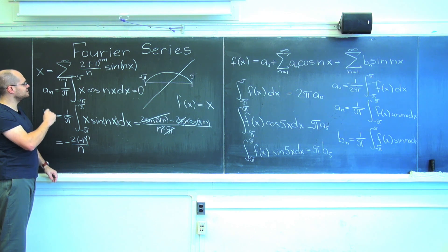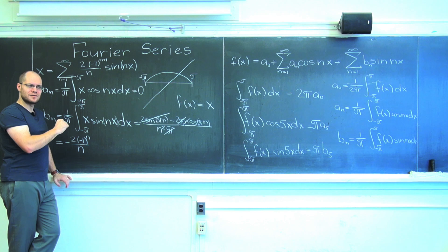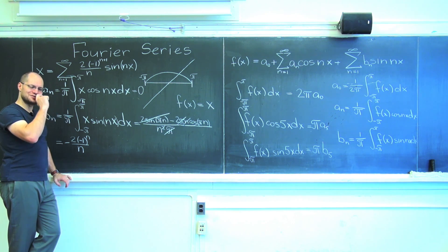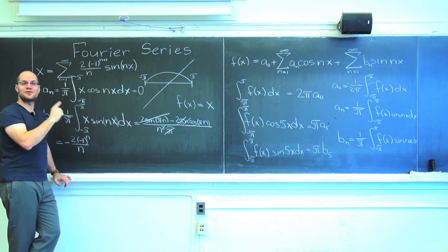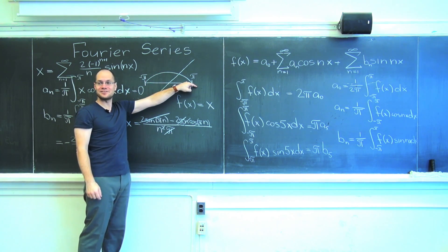And what I'm trying to see is whether we can get the Basel formula from here, which is the sum of inverse squares. And I don't think we can. I'm still trying. Okay, we'll try to get it from the next one. Next, let's consider a function like this.